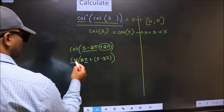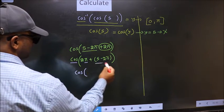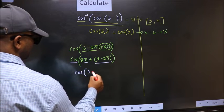Here we have pi. So cos is not going to change. It will remain cos. And inside we get this angle 5 minus 2 pi.